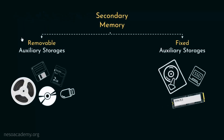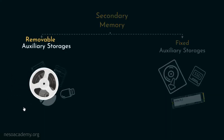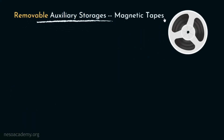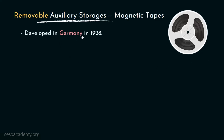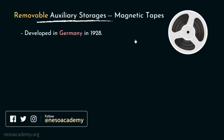Let us begin with the very first removable auxiliary storage — the magnetic tapes. Magnetic tape is a medium for magnetic storage made of a thin, magnetizable coating on a long, narrow strip of plastic film. It was first developed in Germany in the year 1928. The technology was based on magnetic wear recording. Many of us may have seen old audio and video cassettes which used to be recorded and played back using tape recorders — these are mostly obsolete nowadays. The devices used to store data on magnetic tapes are known as tape drives.